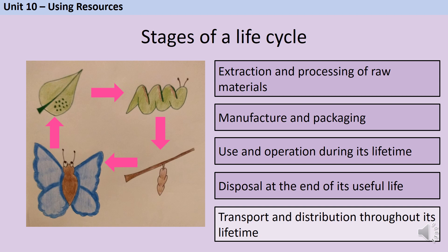I also need to do the same for the crude oil used to make the plastic casing and for the silicon. The second step is manufacture and packaging. It might be that I'll wrap the product in cellophane, requiring more crude oil, or put the computer in a cardboard box, meaning I need to consider where the tree comes from to make that cardboard. I also need to think about the energy used by the factory making the computer.